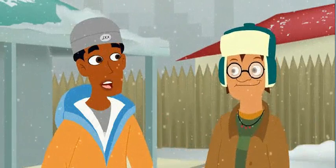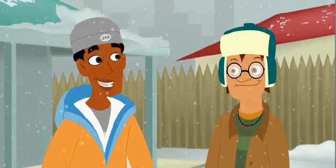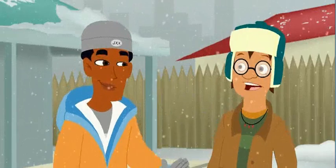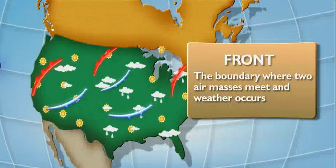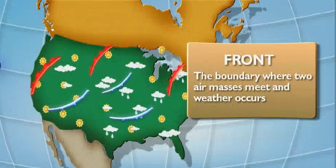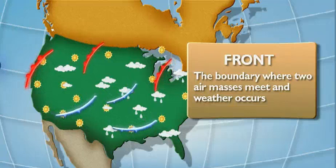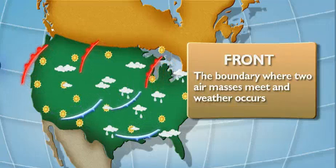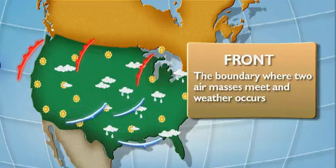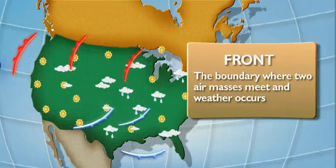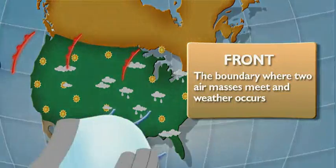The snow didn't just come from nowhere. A cold front moved in. A cold front — a front is the boundary where two air masses clash, and weather, like snow, occurs. There are warm and cold fronts.